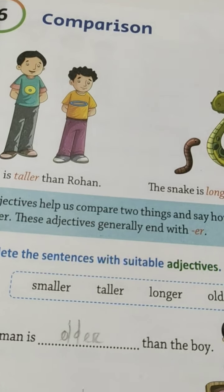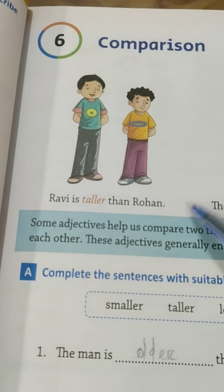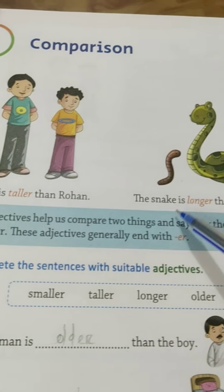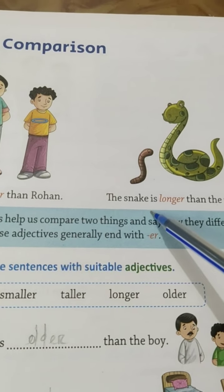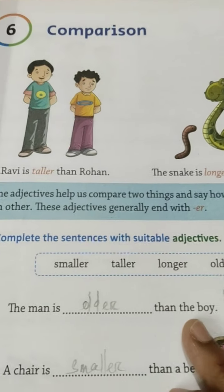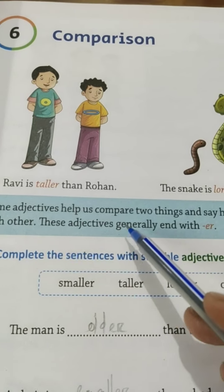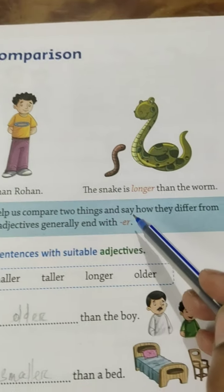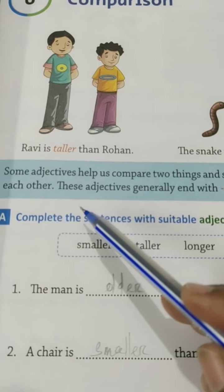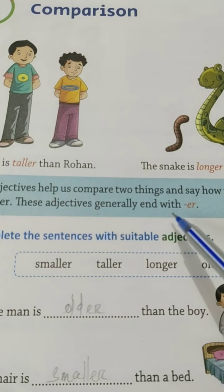Open page number 25. See the examples: Ravi is taller than Rohan; the snake is longer than the worm. Some adjectives help us compare two things and say how they differ from each other. These adjectives generally end with ER.